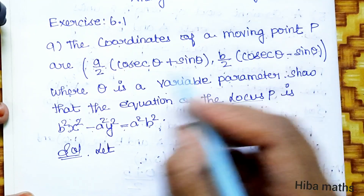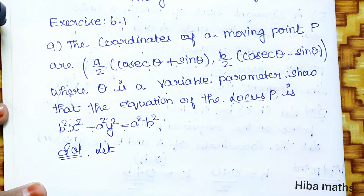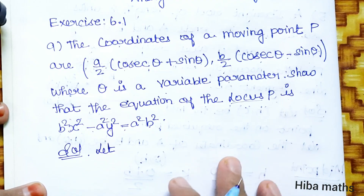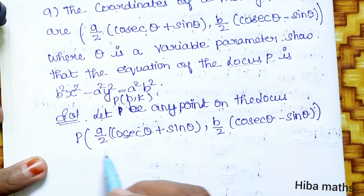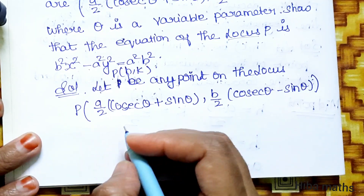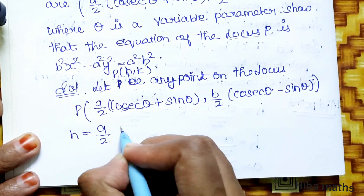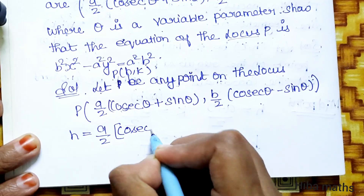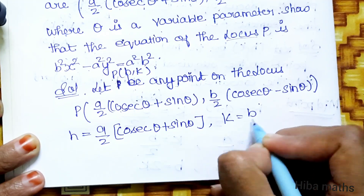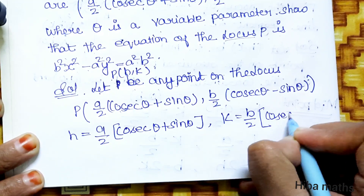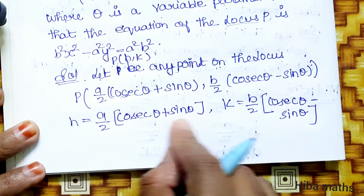We have the moving point coordinates — this is h and this is k. This is the equation of the locus, and this is the proof. Let P(h, k) be any point on the locus. Comparing, h = (a/2)(cosθ + sinθ) and k = (b/2)(cosθ - sinθ).